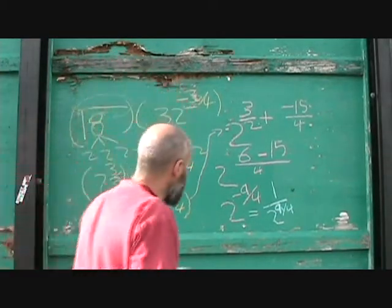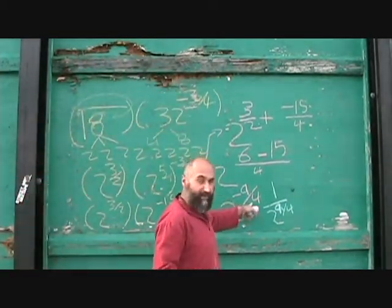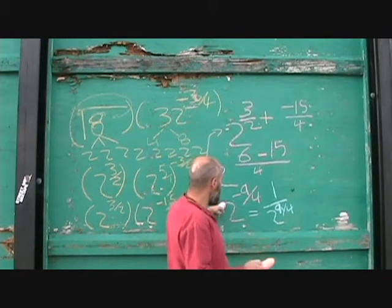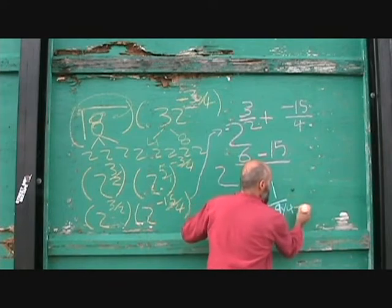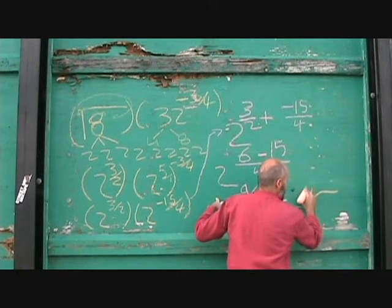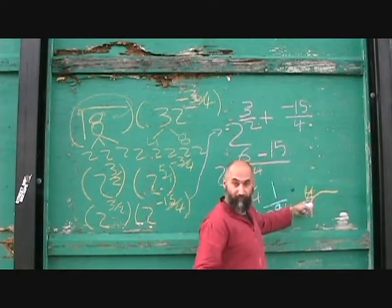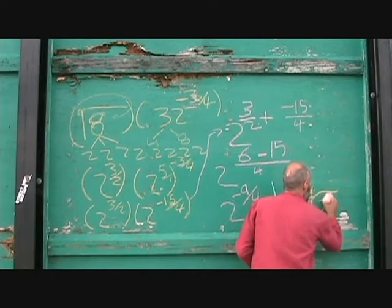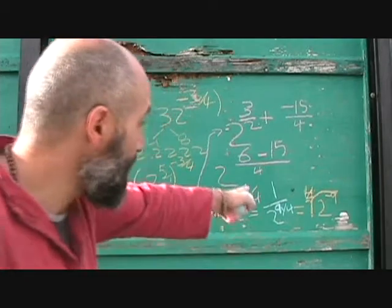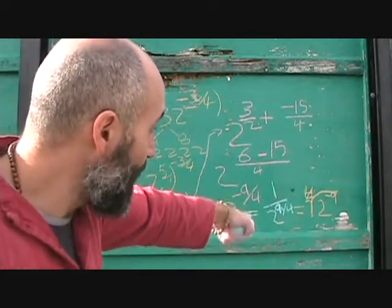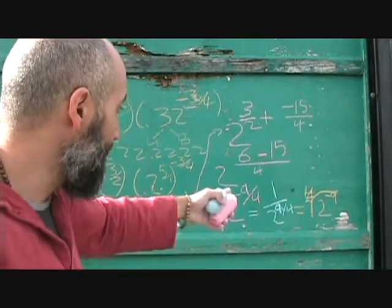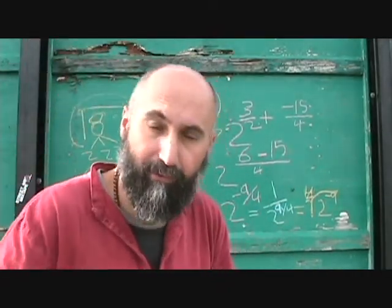Another way to express the same thing is using radicals with no fractions in the exponents. You can take the 4 from the denominator and put it in front of the root symbol, giving you the 4th root of 2 to the power of negative 9. If you want no negative powers, that becomes the 4th root of 1 over 2 to the power of 9.